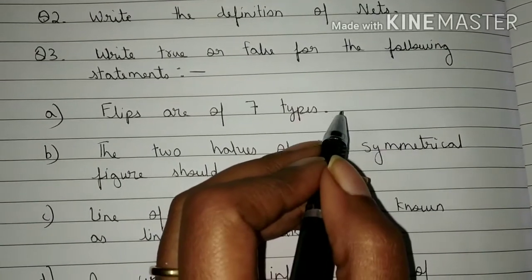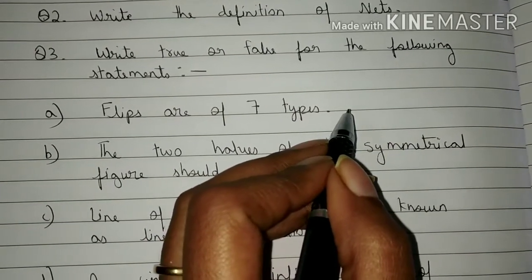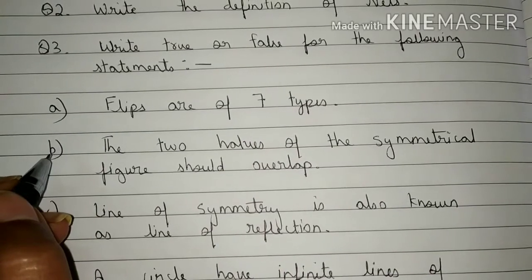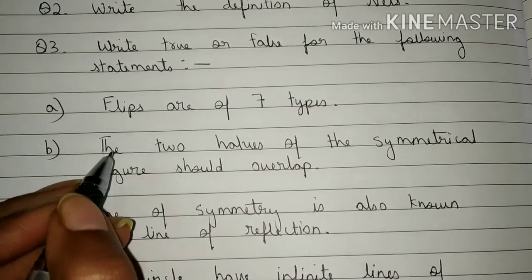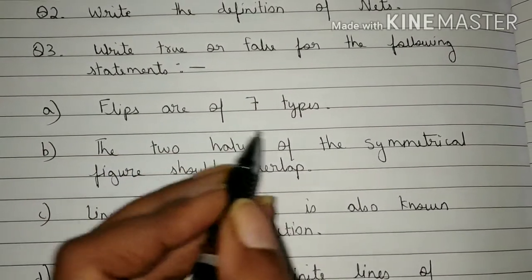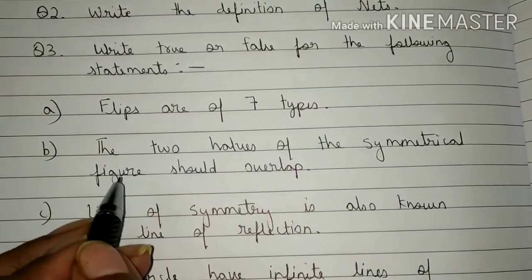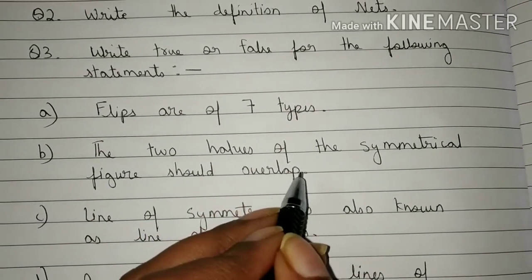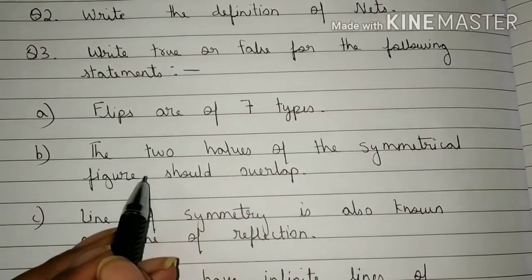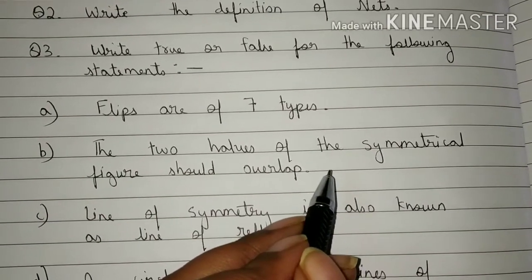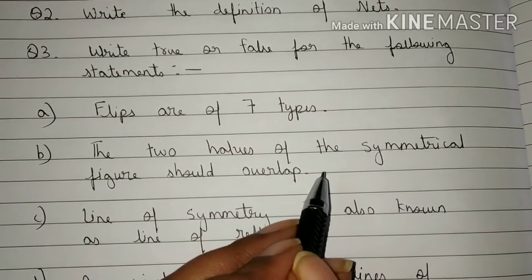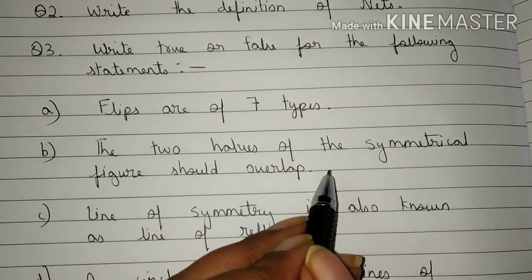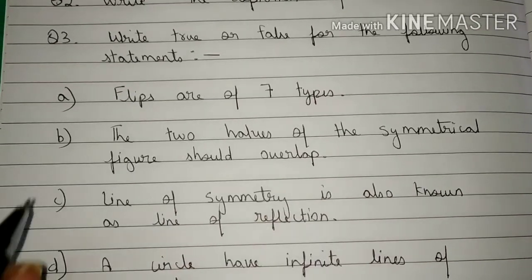Now come to Part B — the statement is: The two halves of a symmetrical figure should overlap. Is this statement true or false? You are going to write your answer here.